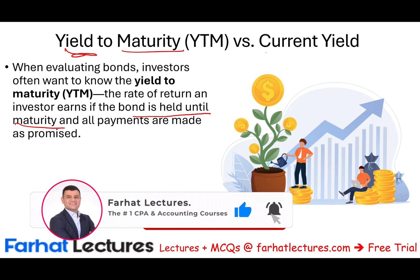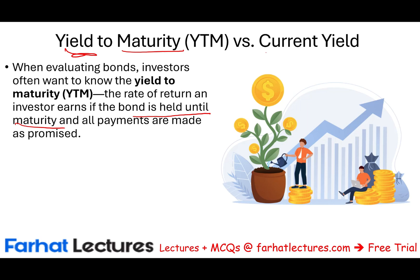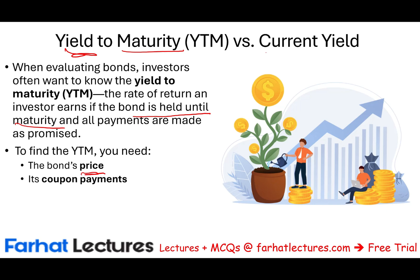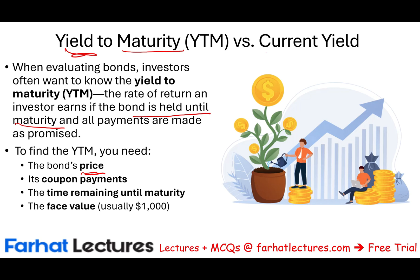In order to find out what the yield to maturity is, we have to find out how to value a bond investment. To value a bond investment, you need the bond price — how much you paid for the bond — the payments on that bond, the time until maturity, and the face value. We're going to assume the face value is $1,000. So if you know how much you paid now, which will be different than $1,000, you're going to get $1,000 later, the coupon payment is how much you'll receive, and time is how long you hold it until it matures. This will give us yield to maturity.